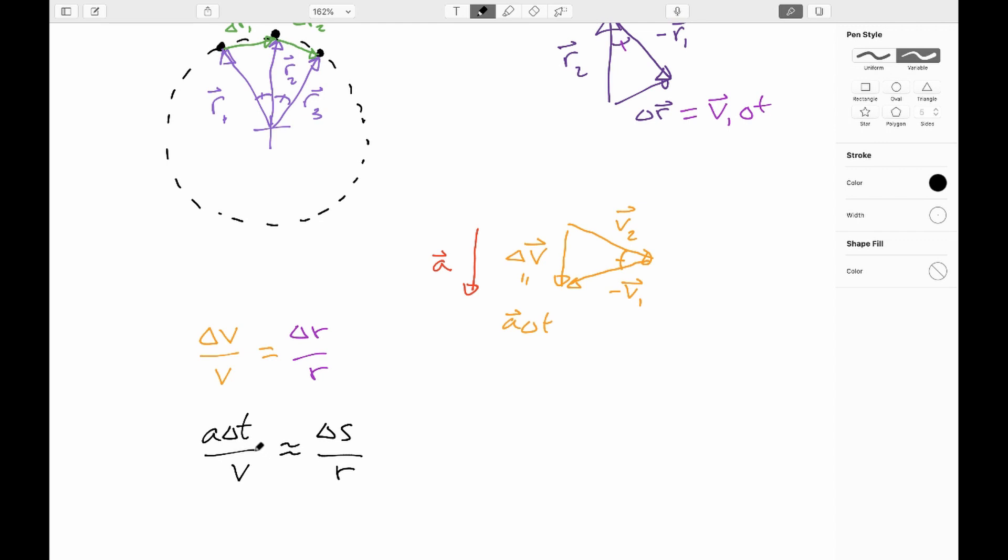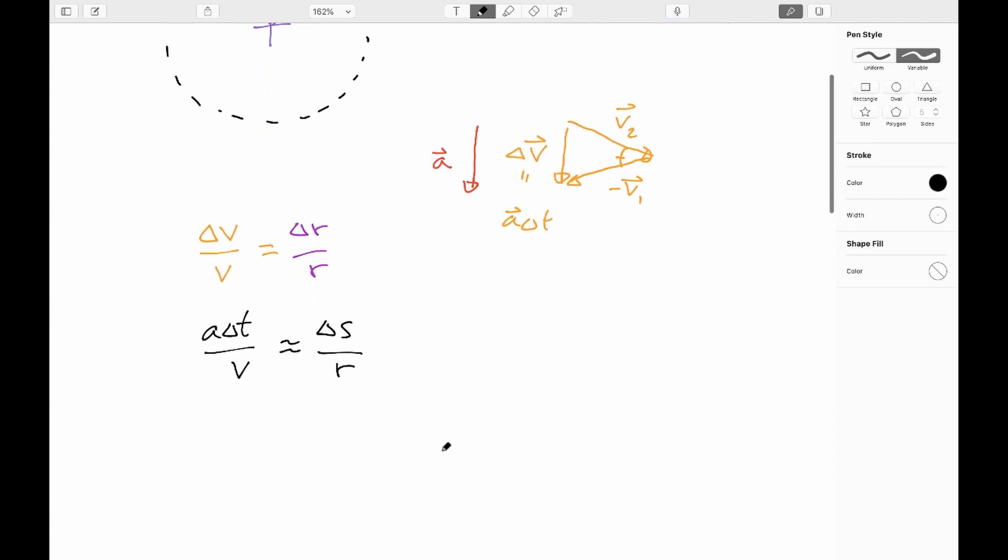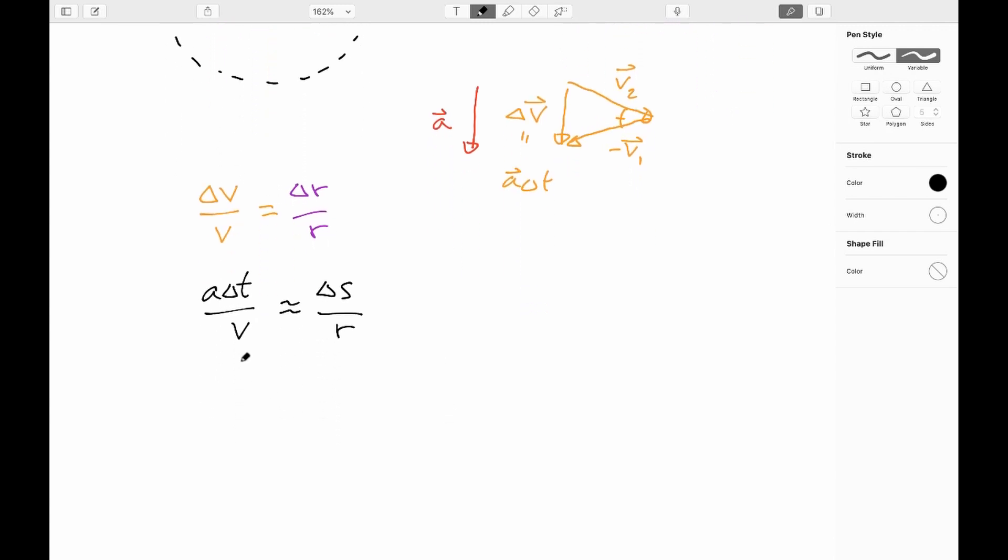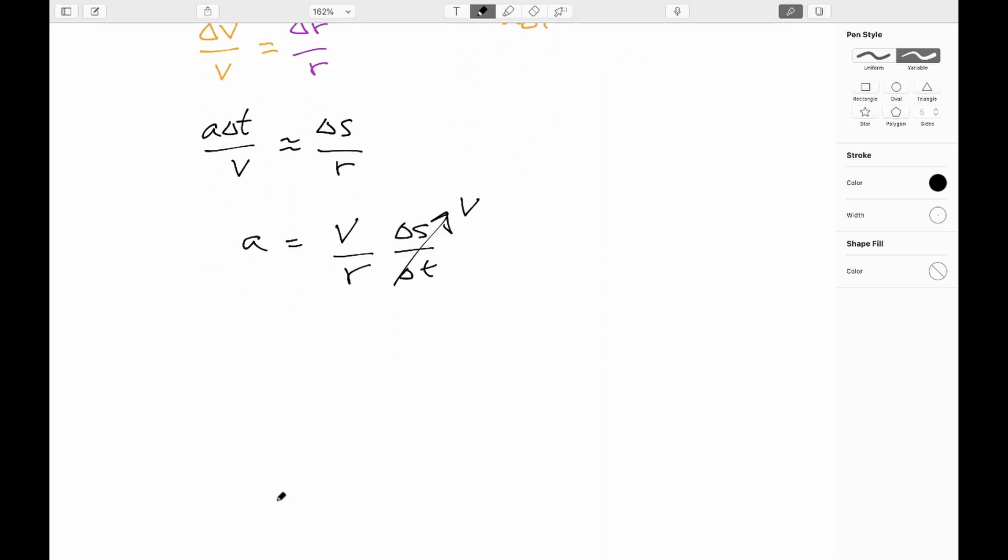But what this lets me do, let me multiply both sides through by V and divide through by delta T. So this will give me A is equal to V over R times delta S, but now I divide by delta T, and that's the speed. So we get that the acceleration is V squared over R.